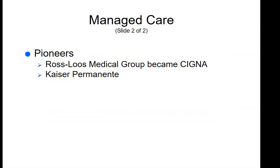Some additional pioneers of that era: the Ross-Luce Medical Group, which became Cigna. In 1929, two Los Angeles physicians, Donald Ross and Clifford Luce, entered into a prepaid contract to provide comprehensive health services to 2,000 employees of a local water company. Another pioneer model health care plan is Kaiser Foundation Health Plan, which was started in 1937.